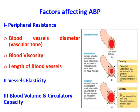Blood viscosity has two determinants: the cellular component (RBCs) and plasma protein. Vessel length, although usually constant, may increase in obesity, increasing total peripheral resistance and arterial blood pressure. One of the important management strategies for hypertension is to reduce weight, thereby reducing the length of blood vessels and thus the arterial blood pressure.